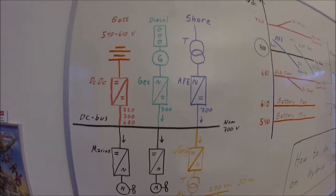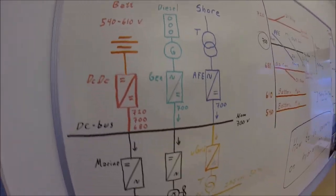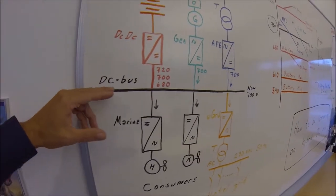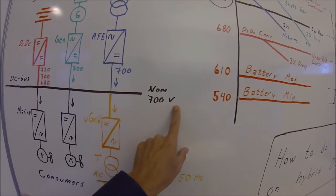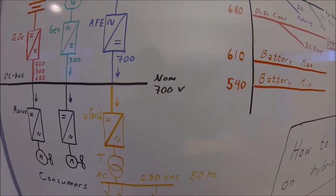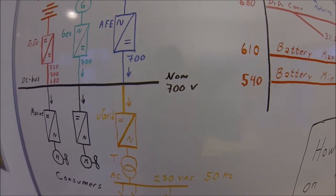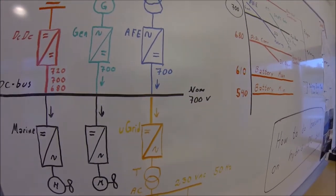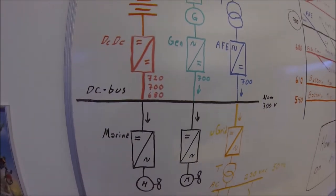However, it contains all the elements you find on a hybrid ship today. Here we have a DC bus and the voltage is selected to be nominal 700 volts. It could be something else, but this is a nice round figure and actually seen on some of these ships.